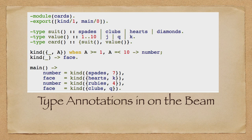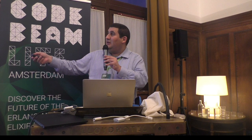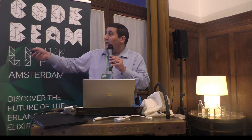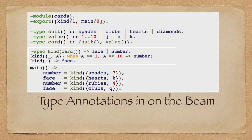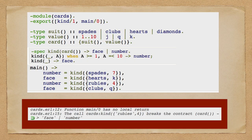We can create types — for example, type 'suit': spades, clubs, hearts, diamonds. Type 'value': one to ten, jack, queen, king. And type 'card', which is a two-tuple with suit and value. Then you have functions that use the card. We have some examples where we break the contract — there is no type 'rubies,' at least not in my deck of cards.